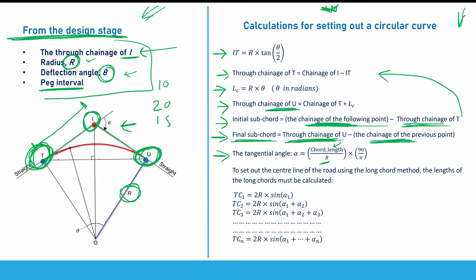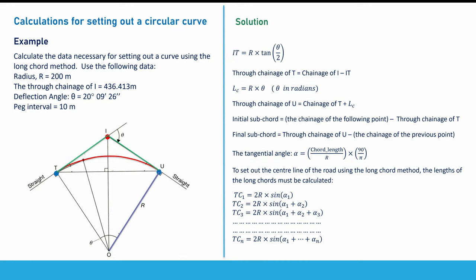The tangential angle alpha equals the chord length divided by R, times 90 divided by pi. Then you calculate the long chord lengths from the tangent point T. The distance from T to the first point C1 is 2R × sin(α₁). The distance to C2 is 2R × sin(α₁ + α₂). The distance to C3 is 2R × sin(α₁ + α₂ + α₃), and so on, adding one alpha each time until we reach the last point.